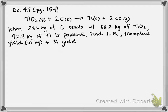Percent yield is calculated by taking the actual yield — which in a word problem will be given to you — over the theoretical yield, which you have to calculate, times 100. Basically this is a way of looking at the efficiency of a reaction. If the amount actually made is close to the theoretical yield, you'll have a high percent yield, meaning the reaction was efficient. On the other hand, a low percent yield means the reaction was probably not very efficient.